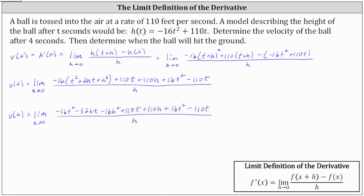Now combining like terms in the numerator, we have negative 16t squared plus 16t squared, which is zero. And we also have 110t minus 110t, which is also zero.